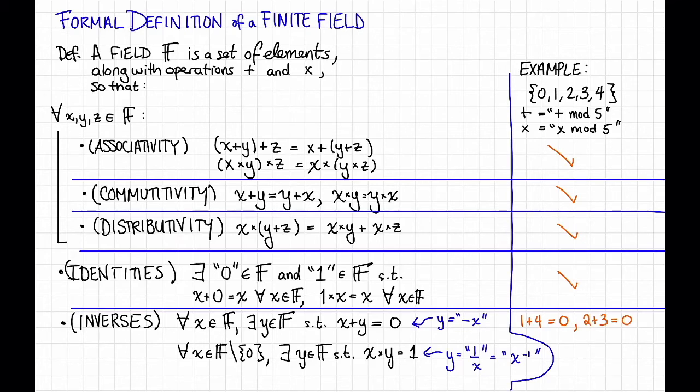And 2 plus 3 is also equal to 0 mod 5. So 2 and 3 are additive inverses of each other, and 0 is its own additive inverse. So every element has an additive inverse. How about multiplicative inverses? We can observe that 1 times 1 is equal to 1, so 1 is its own multiplicative inverse. 2 times 3 is also equal to 1 mod 5, so 2 and 3 are multiplicative inverses of each other. And 4 times 4 is also equal to 1 mod 5, so 4 is its own multiplicative inverse.